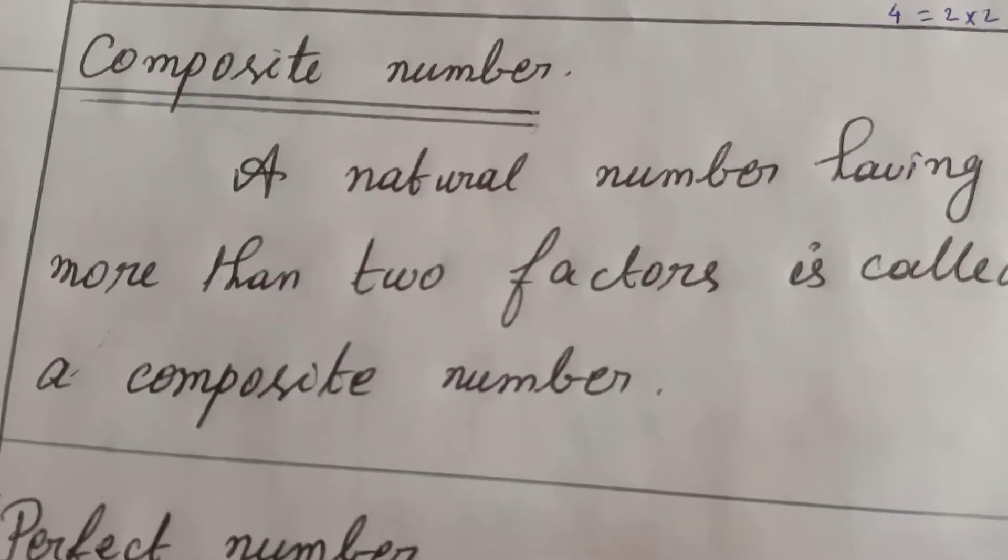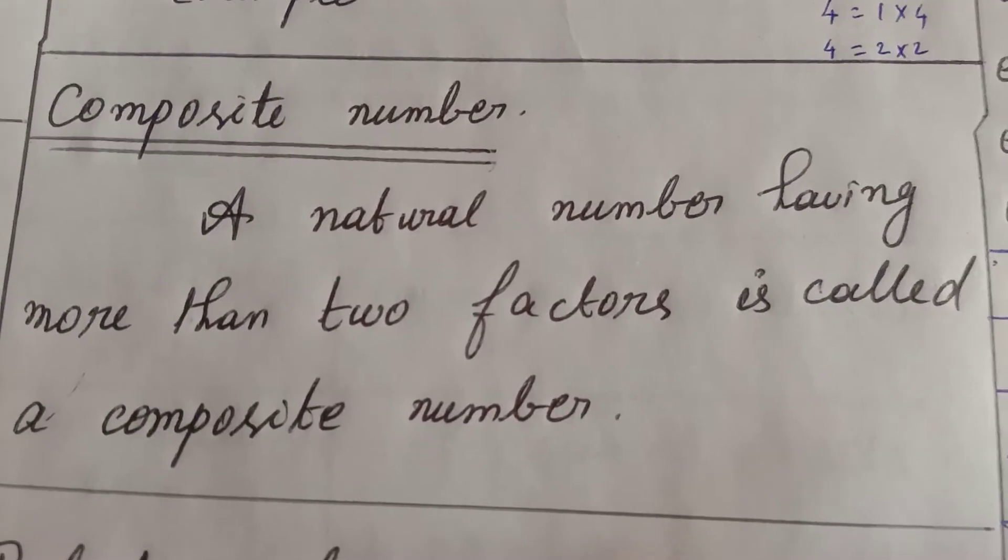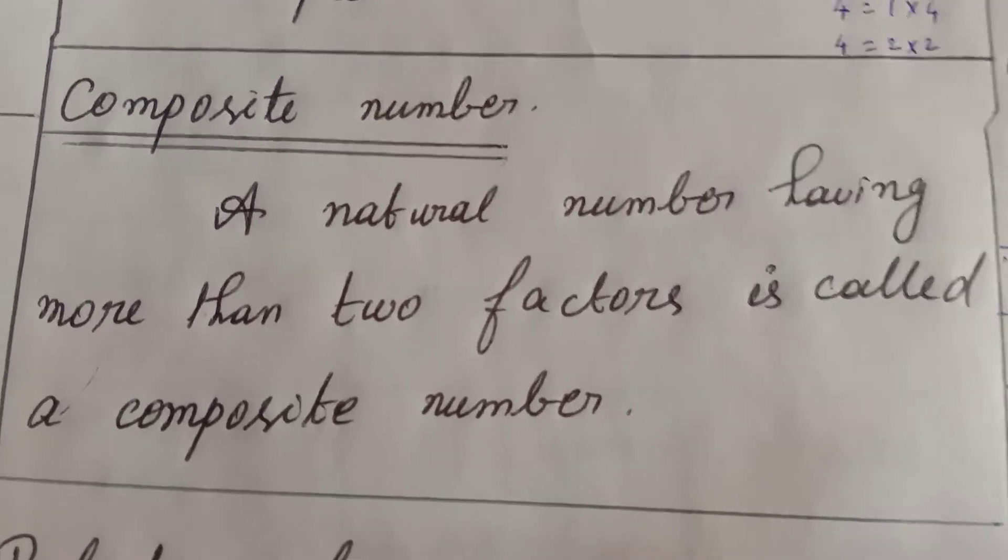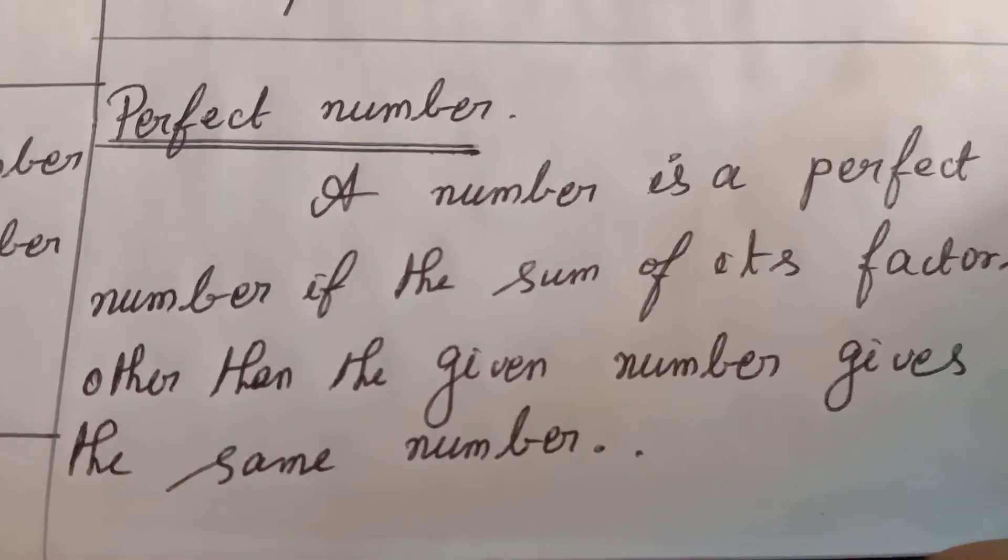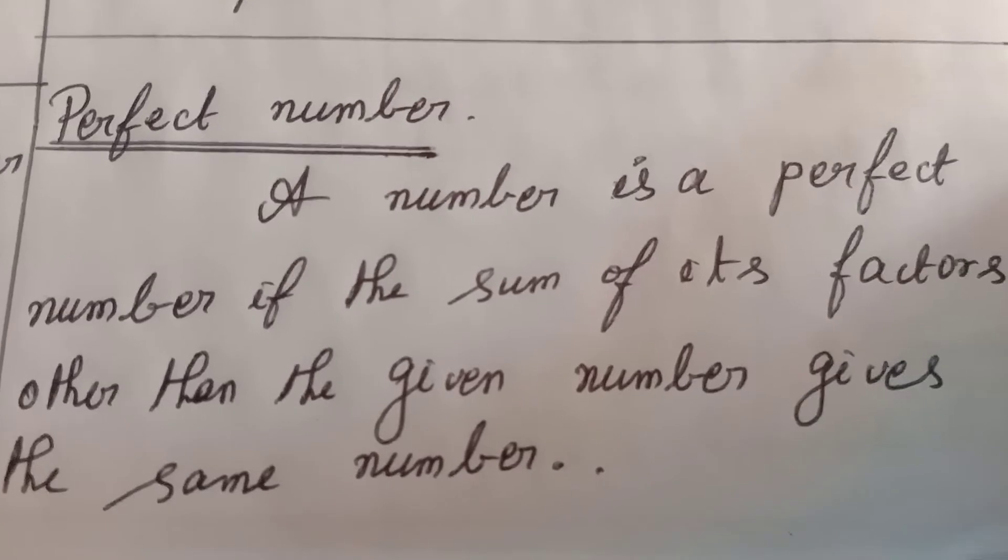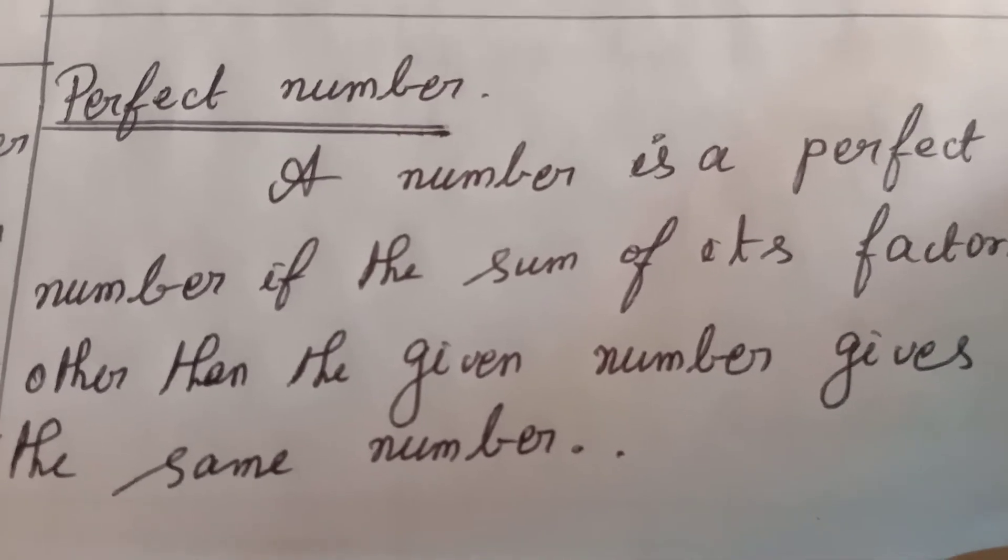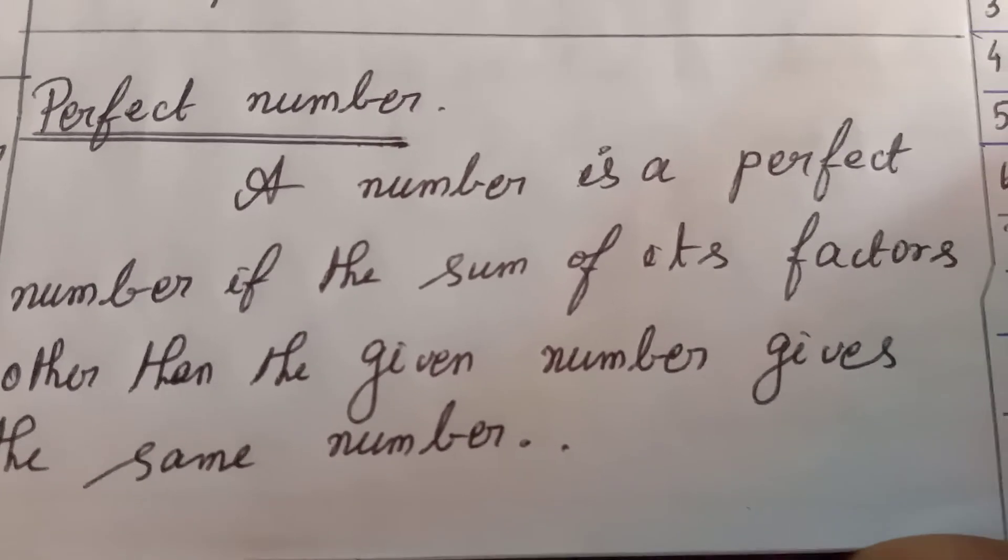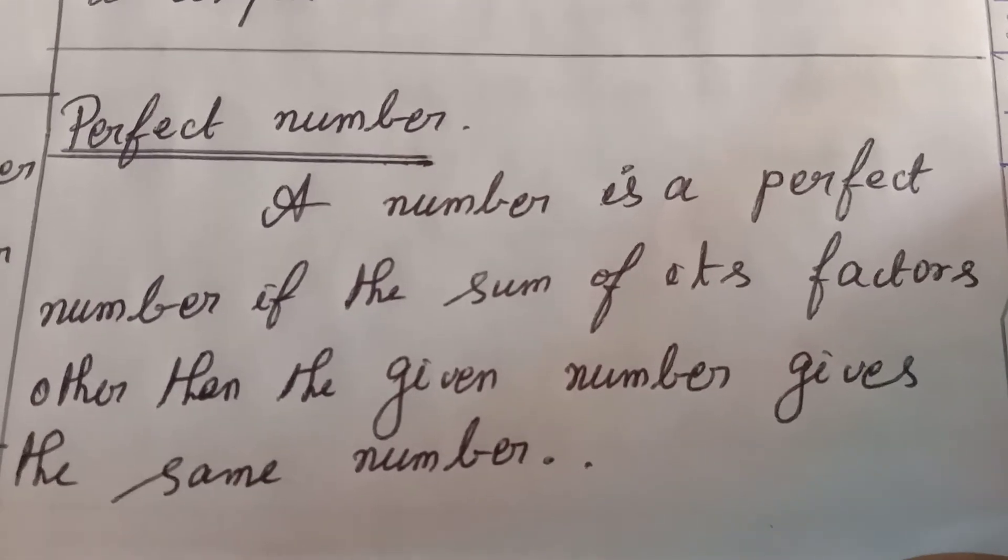Next, composite number. A natural number having more than 2 factors is called a composite number. Next type, a perfect number.